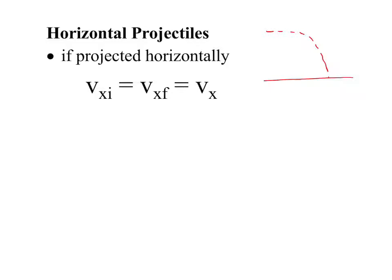In what direction is it even experiencing acceleration? The force of gravity is pushing downwards, and therefore it's experiencing acceleration downwards, but it's not actually experiencing any acceleration in the X direction. Meaning my initial velocity in the X direction is the same as my final velocity in the X direction. Obviously in the Y direction it's very different. Acceleration is the result of a push or a pull.